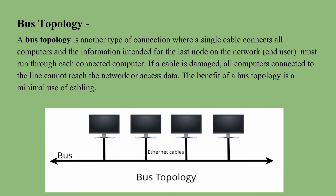The first one is bus topology. It is the type of connection where all the computers are connected to a single cable — this cable is Ethernet. When the data is sent by one user, all the users receive it. The information sent for the last node will also be received by all the other users.